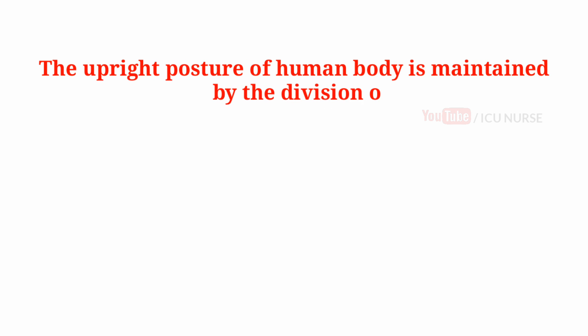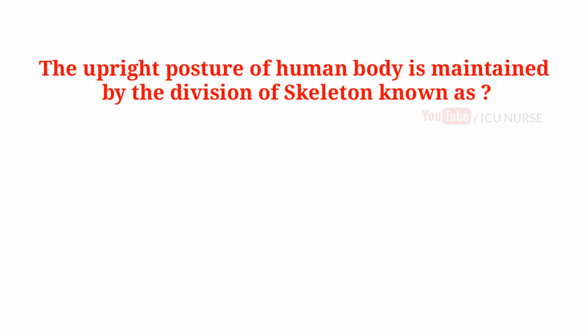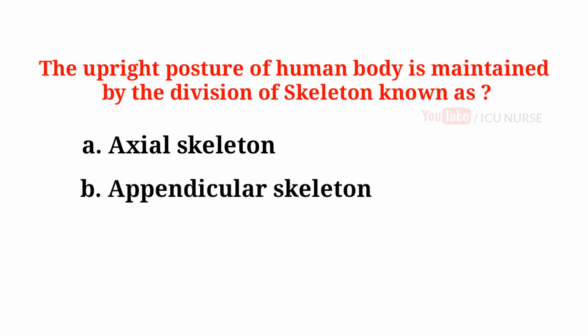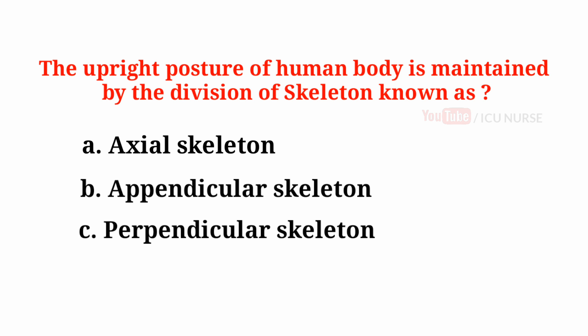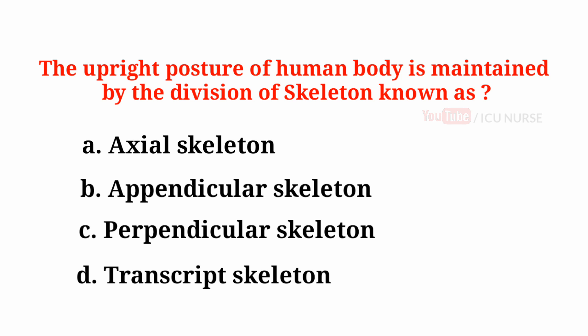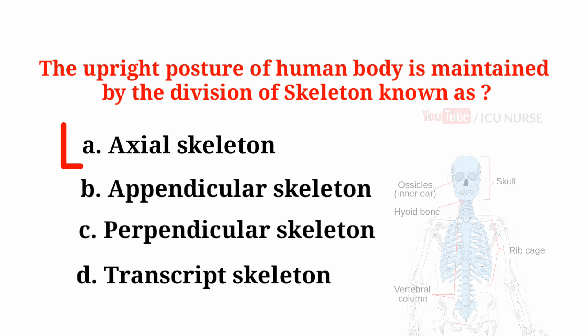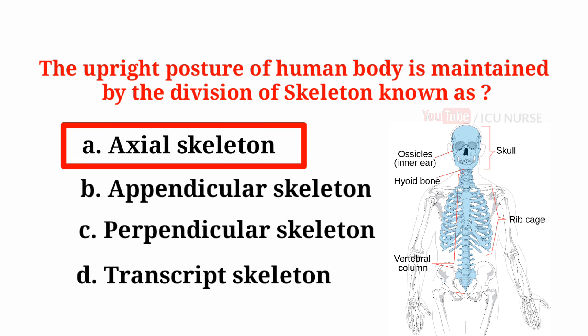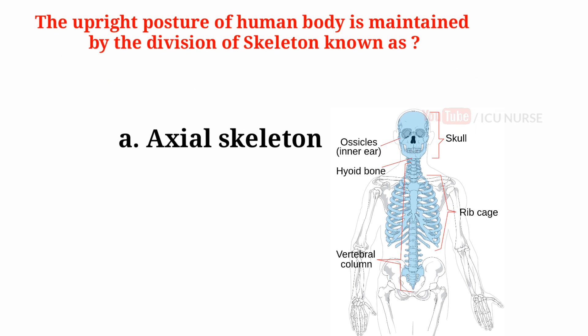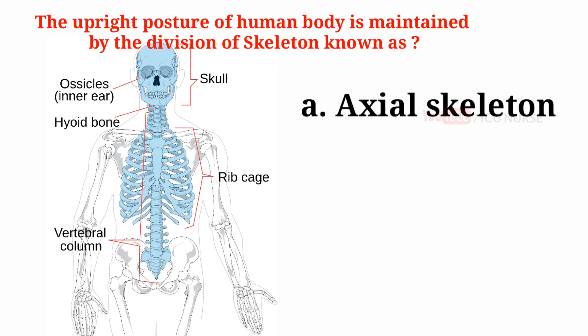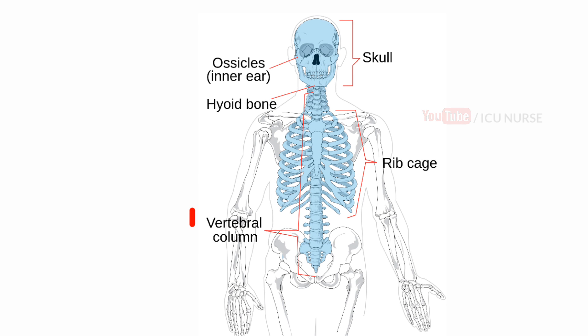The upright posture of the human body is maintained by the division of skeleton known as A. Axial skeleton. The upright posture of the human body is maintained by the axial skeleton. The axial skeleton consists of the vertebral column, the ribcage, and the skull.